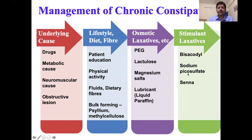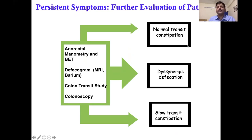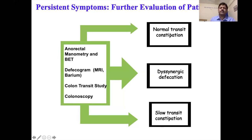With this approach, more than 80 to 85 percent of patients will get better. However, a small group will not respond to these measures. For these patients, further evaluation with special tests is needed to categorize functional constipation into dyssynergic defecation, slow transit constipation, or normal transit constipation. The available tests are anorectal manometry, balloon expulsion test, defecogram, and colon transit study.